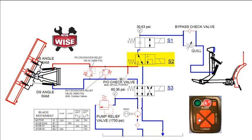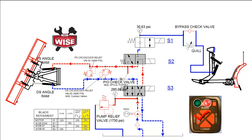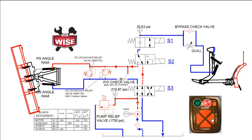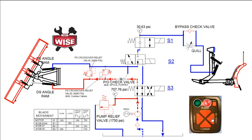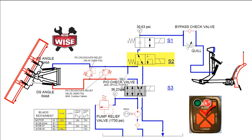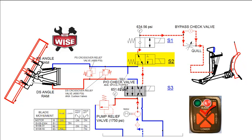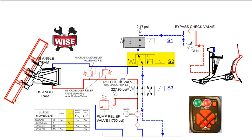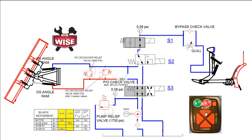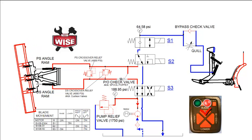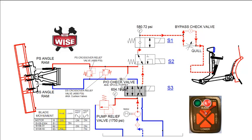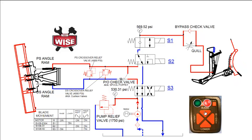The three-way valve, or S2, is activated during the angle left and the angle right functions. The unshifted S2 valve is also used during the raise and lower functions. The four-way valve, or S3, is activated during angle left and also in raise. Due to its location in the circuit, fluid flows through the S3 valve in all functions.